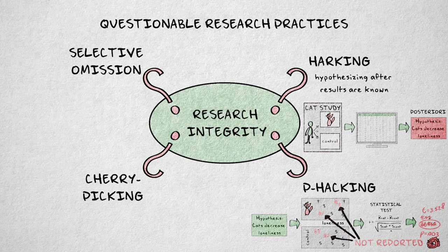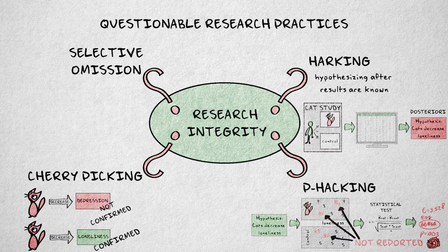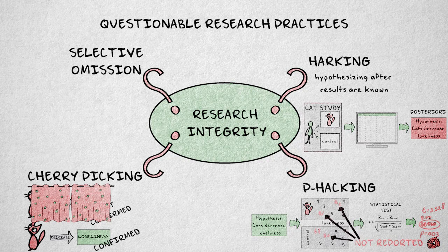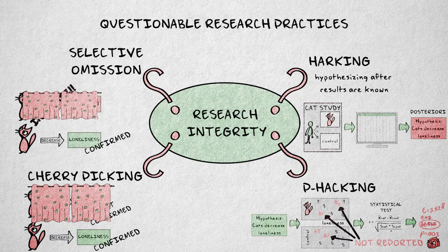A special form of p-hacking is cherry-picking: reporting only results that are favorable and significant — for example, only one out of three experimental conditions, and only one of two dependent variables. The opposite of cherry-picking is selective omission. Selective omission refers to the omission of non-significant results, but also omission of results that contradict the hypothesis.